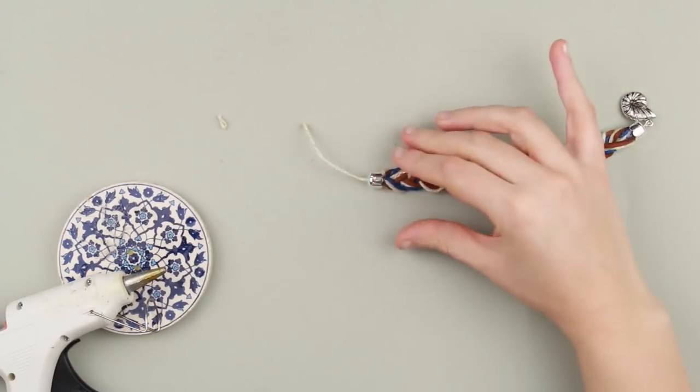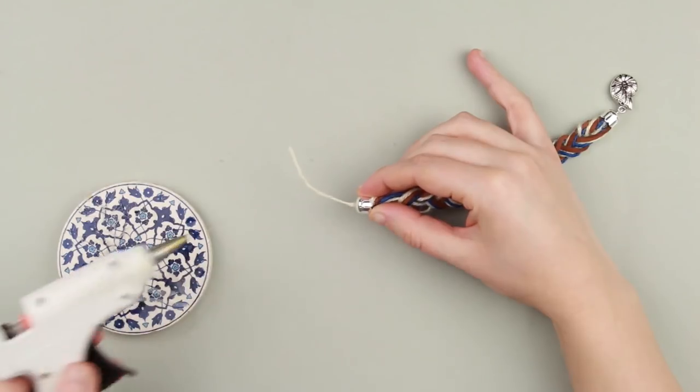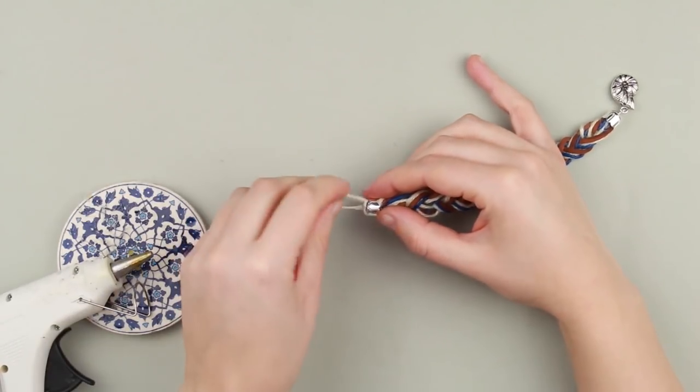Snip off the rope end. Add a bit of glue to the rope near the cap. Attach the end forming a loop.